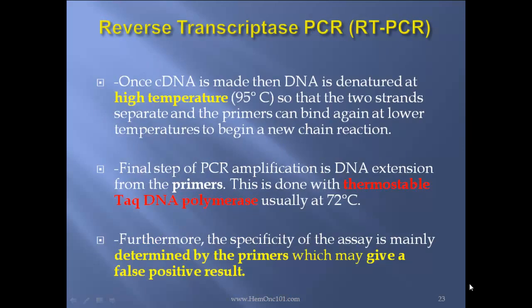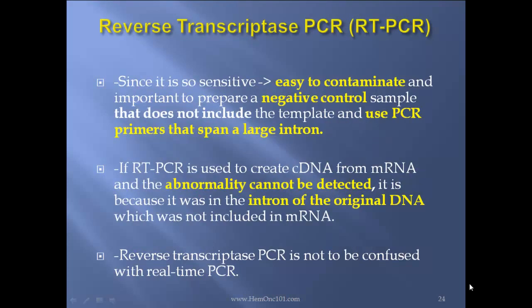Once DNA is made, it is denatured at high temperatures — 95 degrees Celsius — so that the two strands separate, and the primers can bind again at lower temperatures to begin a new chain reaction. The final step in PCR is DNA extension from the primers, done with thermostable Taq DNA polymerase, usually at 72 degrees Celsius. The specificity of the assay is mainly determined by the primers, which may give a false positive result. Since it is so sensitive, it is easy to contaminate, so it is important to prepare a negative control sample. If RT-PCR is used to create cDNA from mRNA and an abnormality cannot be detected, it is because it was in the intron of the original DNA, which was not included in mRNA — that's a take-home.